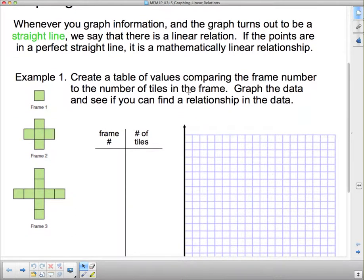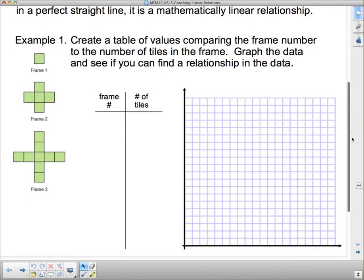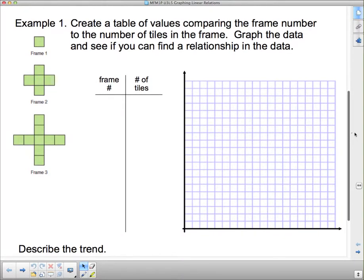Example 1: Create a table of values comparing the frame number to the number of tiles in the frame. Graph the data and see if you can find a relationship in the data. So here's, I've started this off, we've got frame 1, frame 2, frame 3, and we have to figure out how many tiles are in the frame. So this one's actually pretty straightforward to start off with. We're going to create a table of values. In frame number 1, there is one tile. In frame number 2, there is the one tile in the center from frame number 1, and then we added 1, 2, 3, 4 more. So there's 5 tiles.